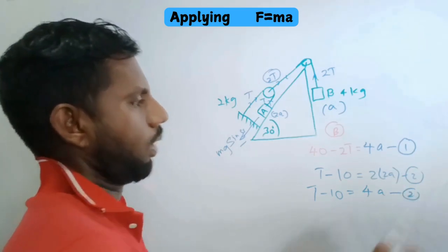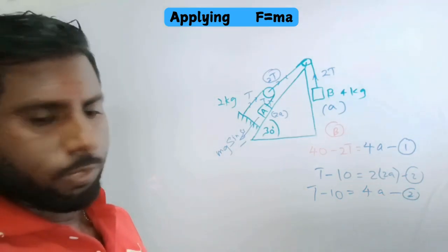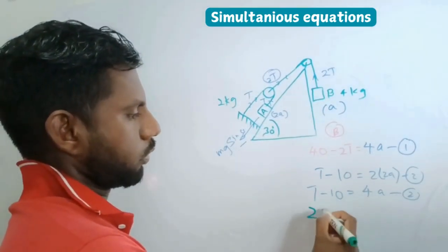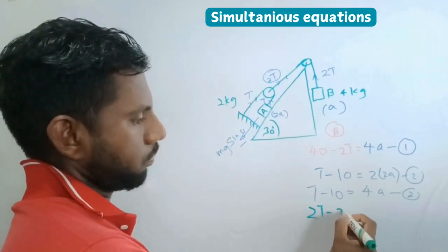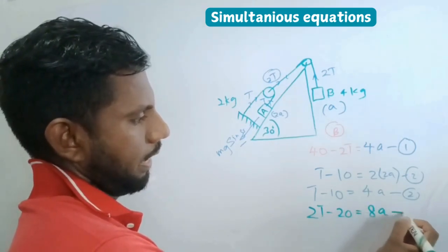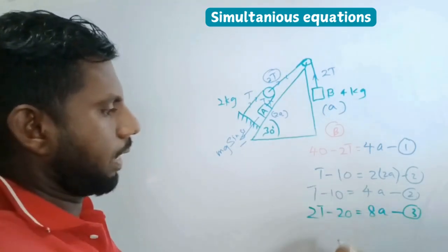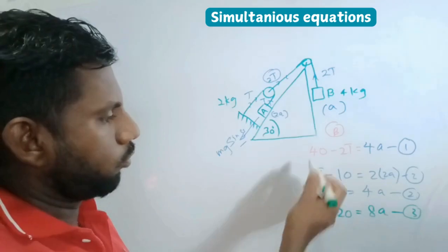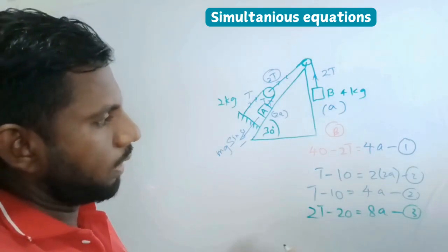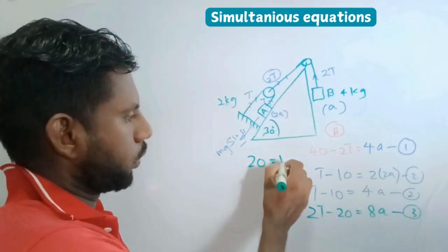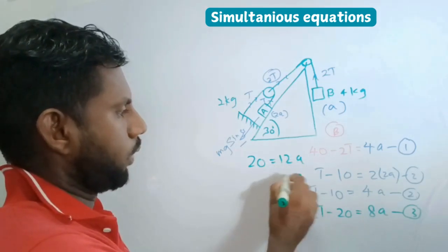Now we can simplify these two. I'll multiply the second one by two, so it's 2T minus 20 equals 8a. Let's add these two equations. The 2T terms cancel off. 40 minus 20 is 20, so 20 equals 12a.